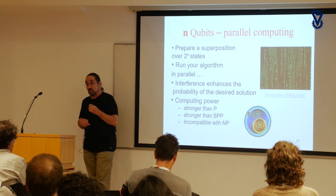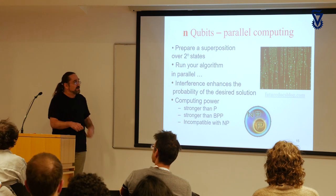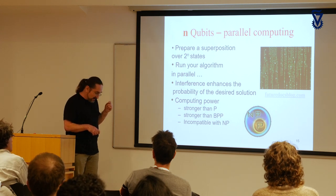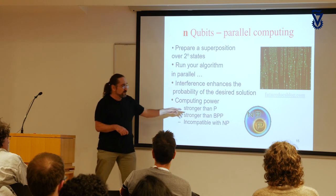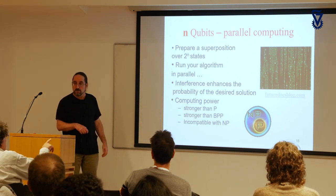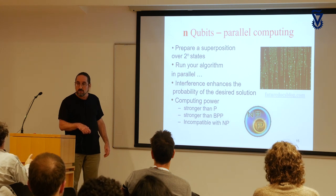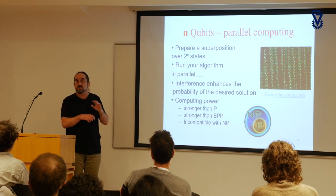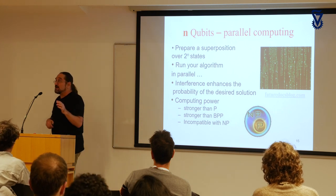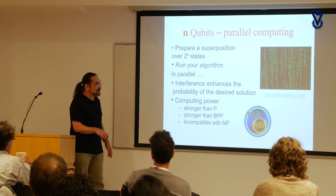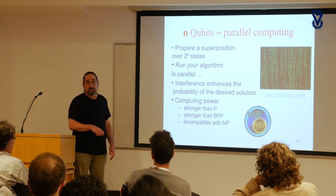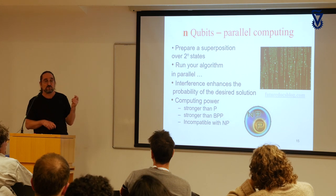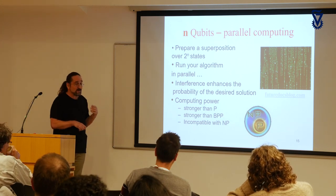How do we know that a classical computer cannot solve it? Almost everything in complexity we discuss is under assumptions, because in computer science we cannot prove that P is different from NP. Even if we assume that P is not equal to NP, there are still many things we cannot prove. Suppose you have a machine that can solve NP — it is called a non-deterministic machine. If we give it a hint from somebody with infinite power, we can solve an even larger class.